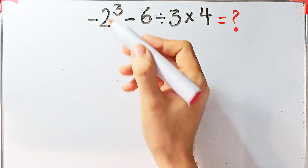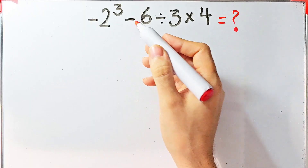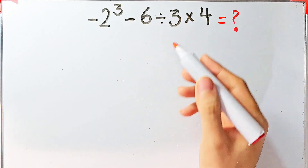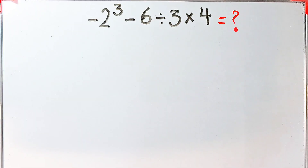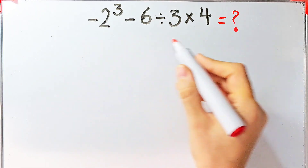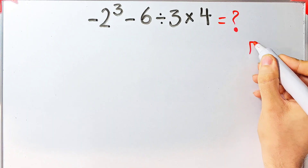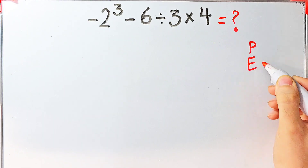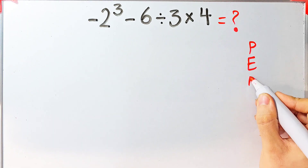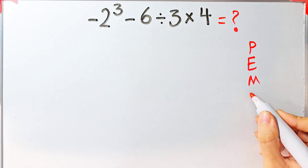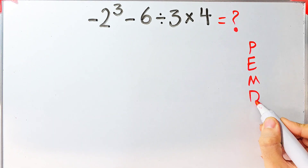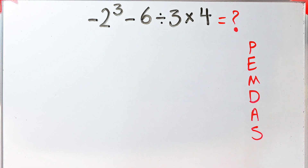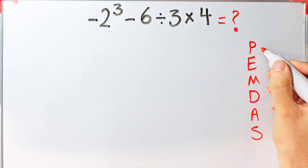In this question we have exponent, subtraction, division, and multiplication. To solve this question we need to follow the order of operations, which is PEMDAS. PEMDAS shows the priority of the mathematical operations, and if you don't pay attention to this rule you will get the wrong answer.